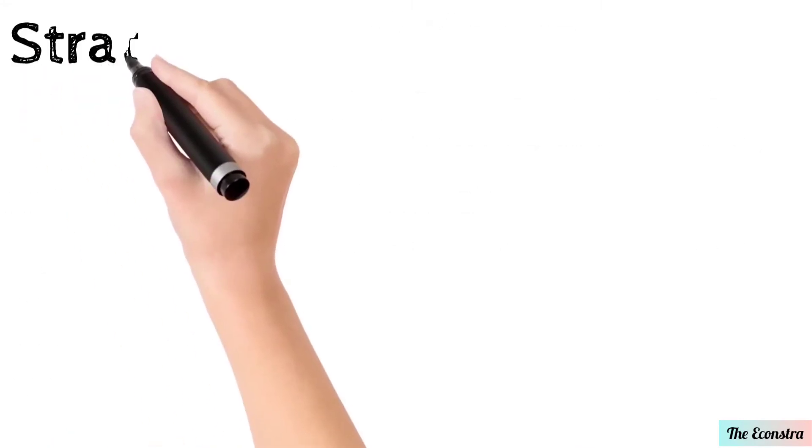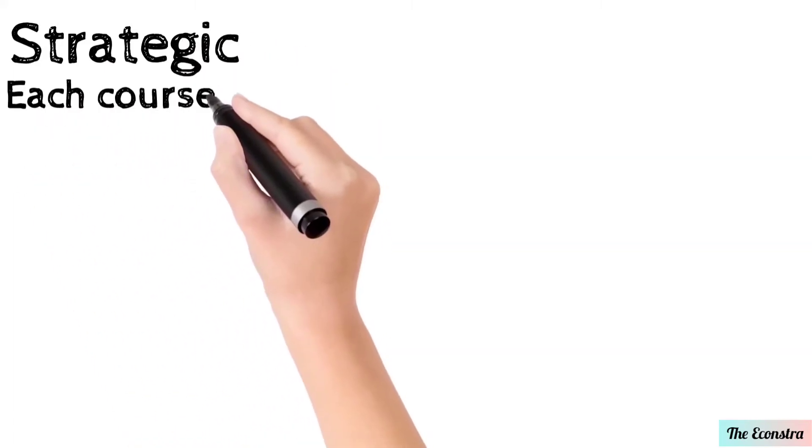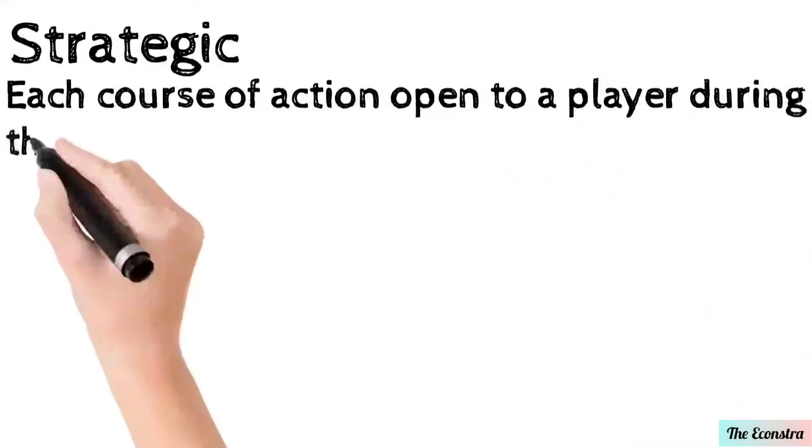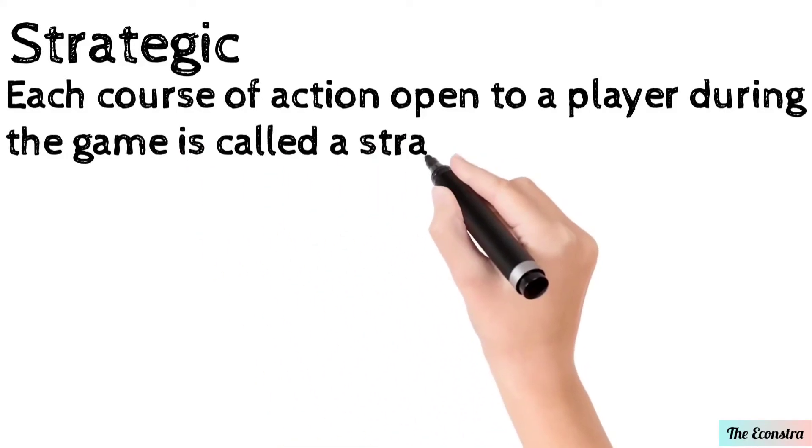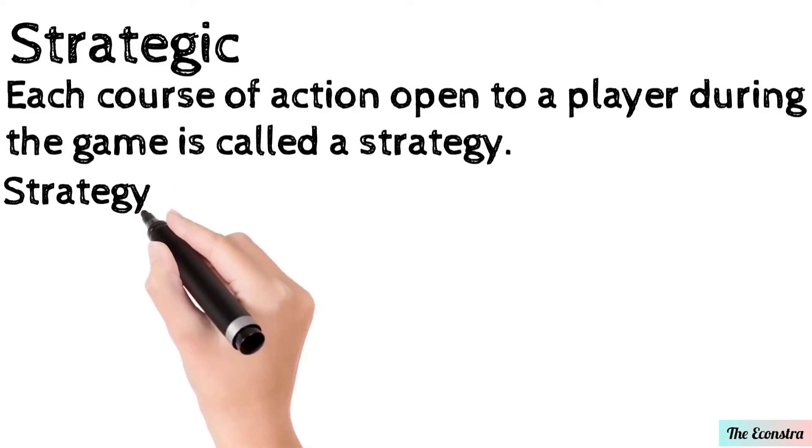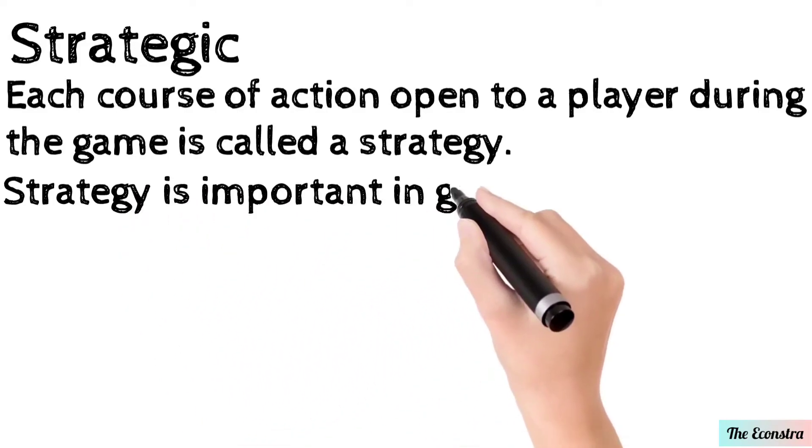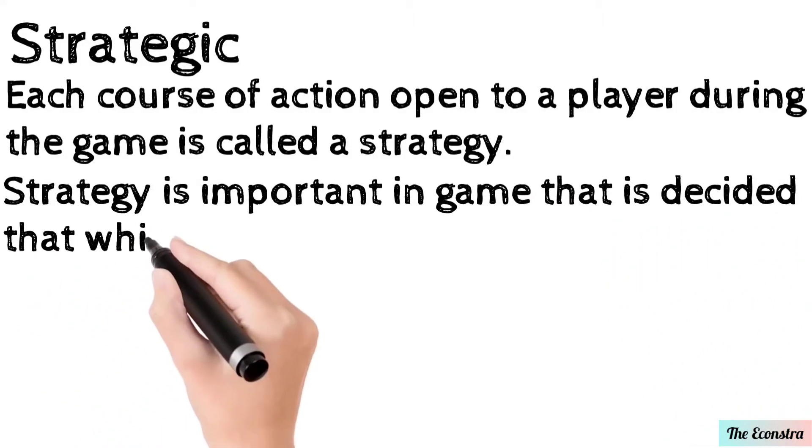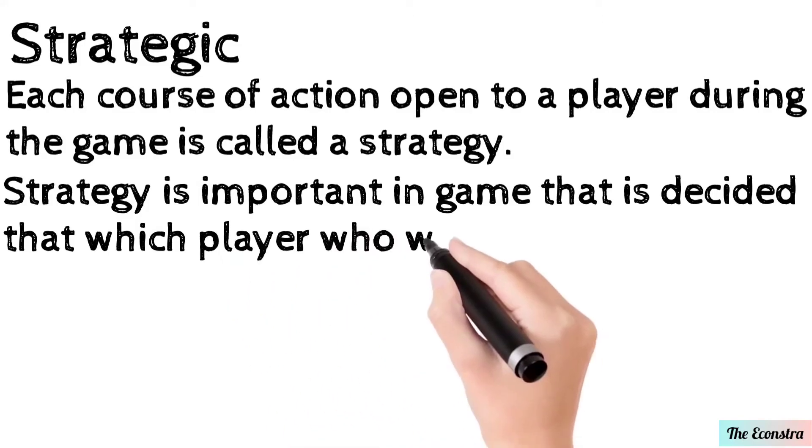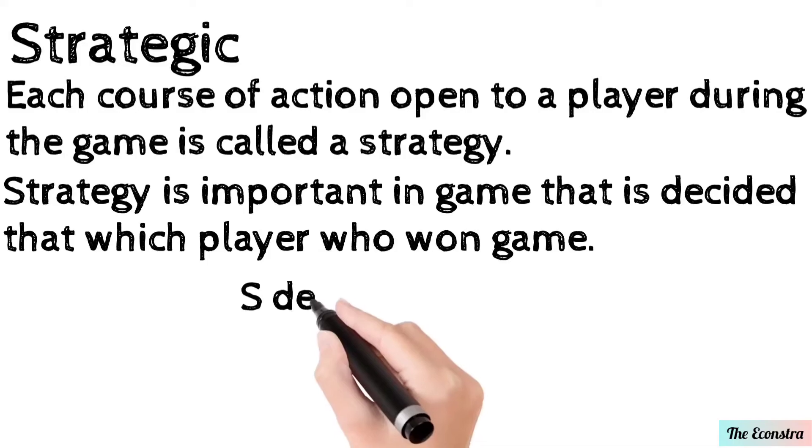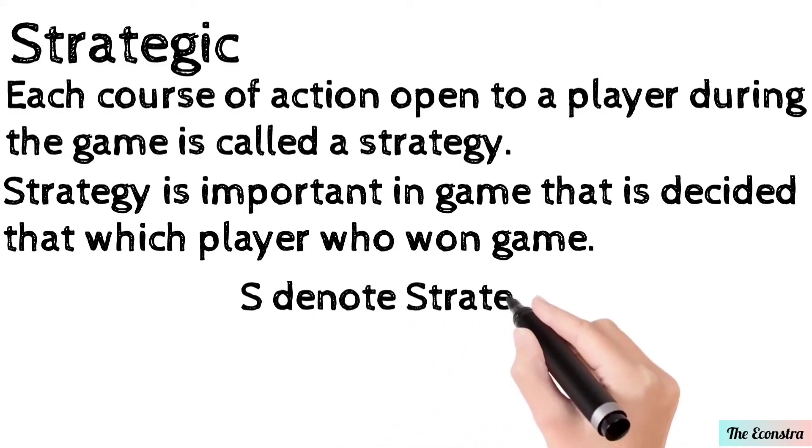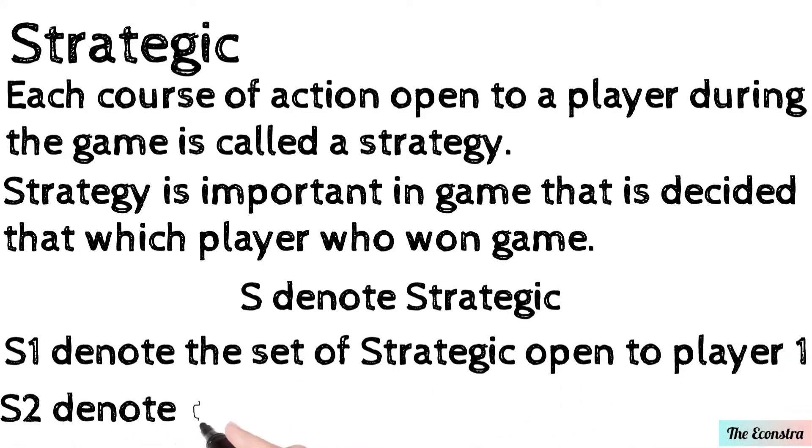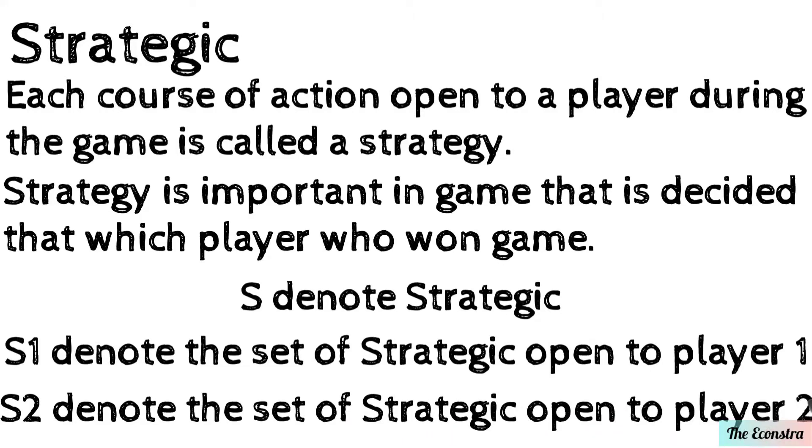Second is strategy. Each course of action open to a player during the game is called a strategy. That means the action which the players select during a game is called strategy, and strategy depends on how a player plays during a game. Strategy is important in deciding which player wins a game. S1 denotes the set of strategies open to player 1, and S2 denotes the set of strategies for player 2.